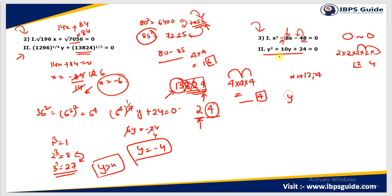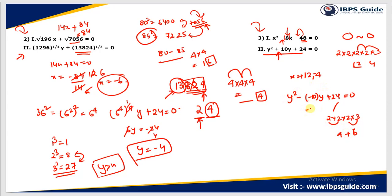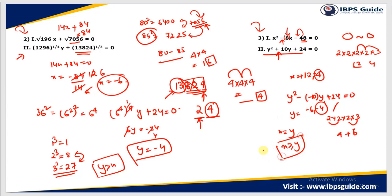Now for y² + 10y + 24 = 0, I rewrite it as y² − (−10y) + 24 = 0. Factorizing 24: 2 × 2 × 2 × 3. So 3 × 2 = 6 and 2 × 2 = 4, giving 4 + 6 = 10. So y = −6 and −4. Comparing: x = −4 equals y = −4 in one case, and x = +12 is greater than both y values. So x is greater than or equal to y.